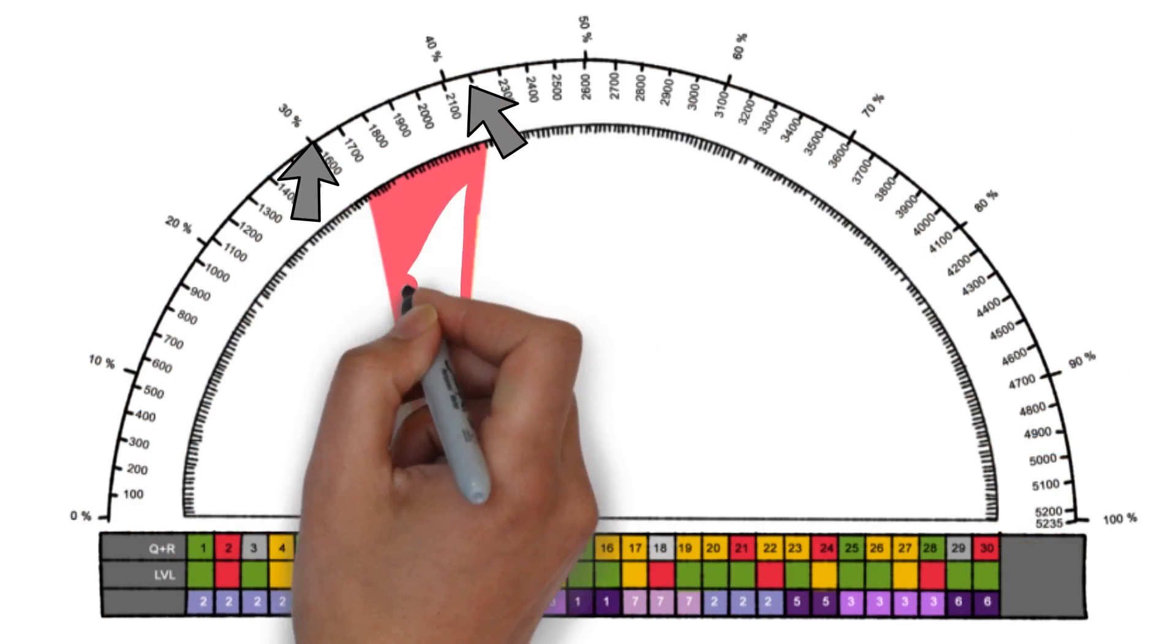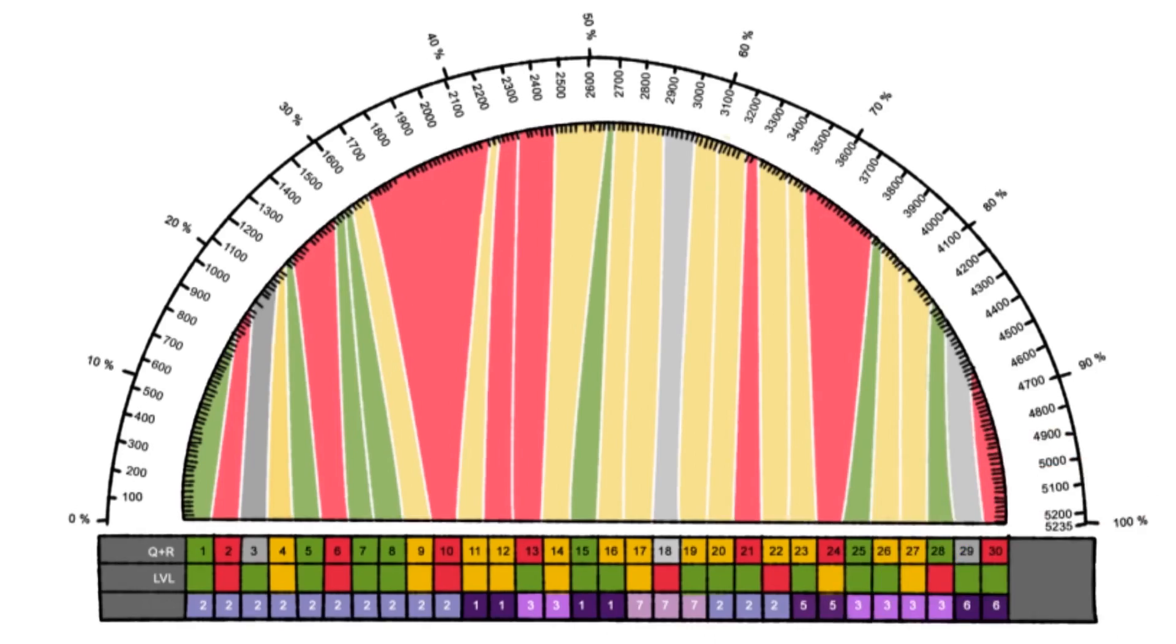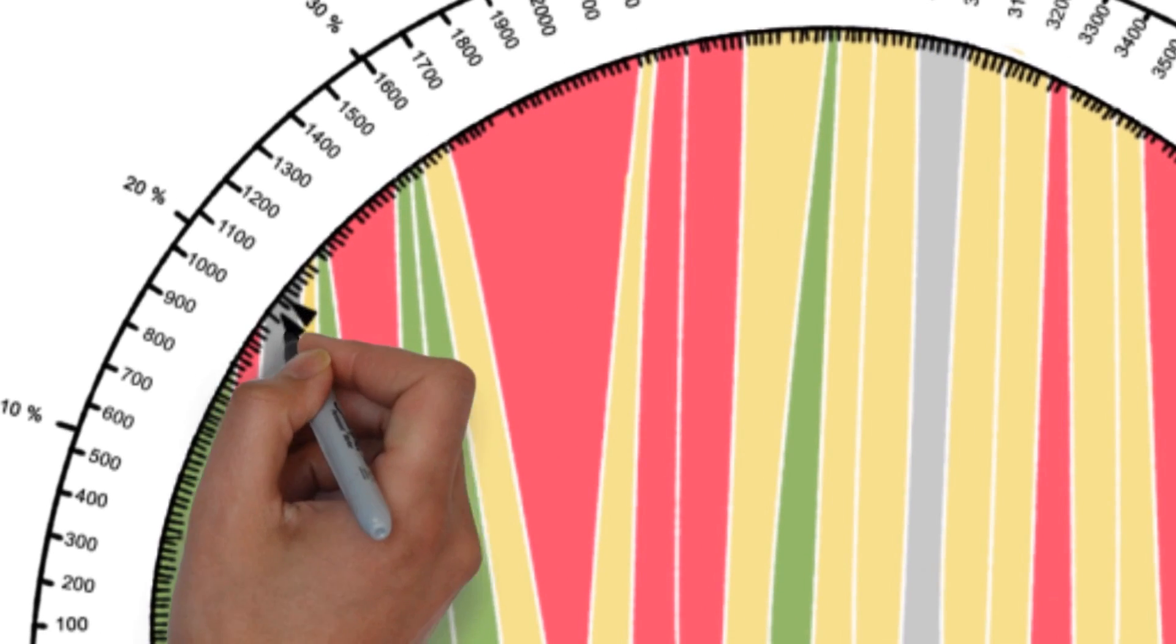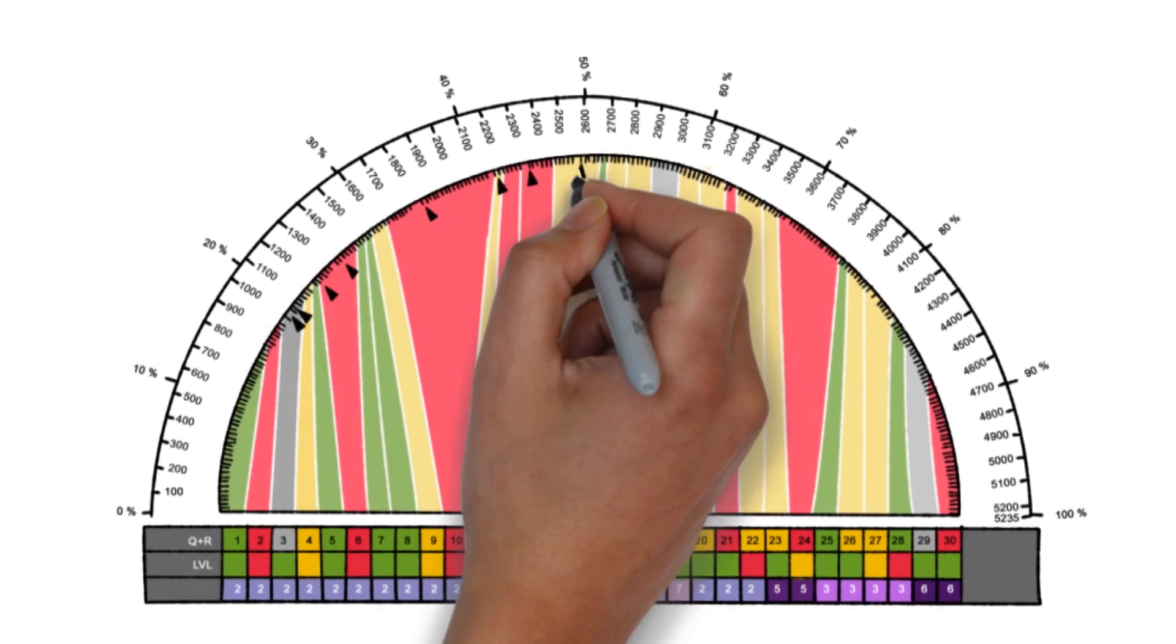These ribbons show you how long it took you to solve each and every question. And these small black triangles show when you left a question and how many times you left a question to go work on something else and come back.